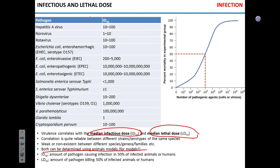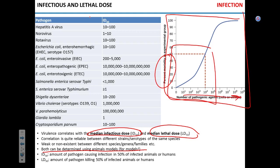A graph shows the dynamic of percent of people dying versus number of pathogen particles — it's not linear. Generally speaking, a lower infectious dose correlates with higher virulence, meaning you need fewer particles to cause disease. However, you have to be careful with this assumption because you cannot really compare two different pathogens based on this measure alone.